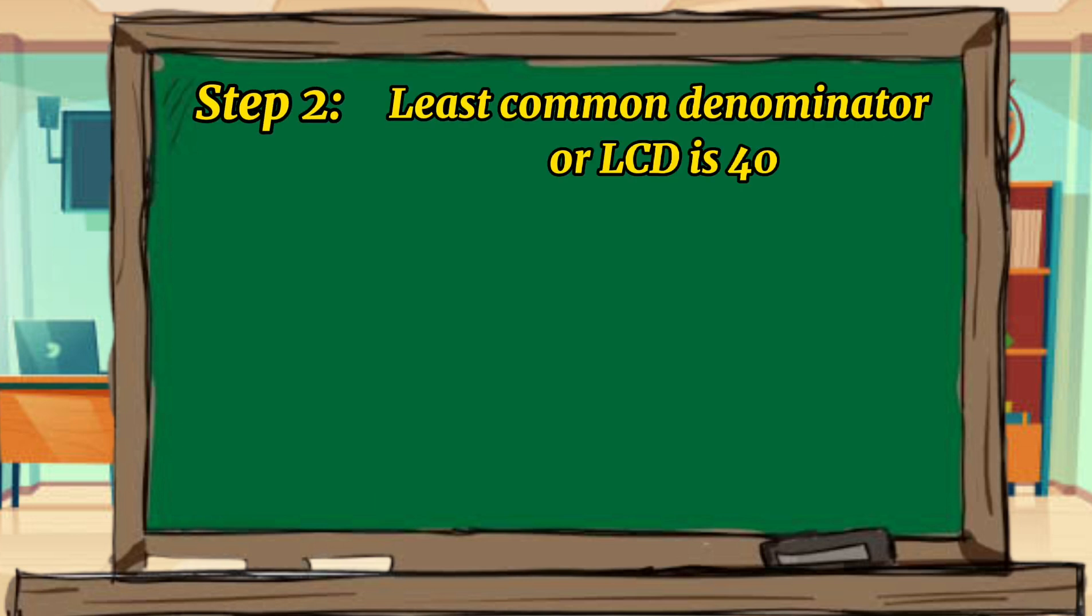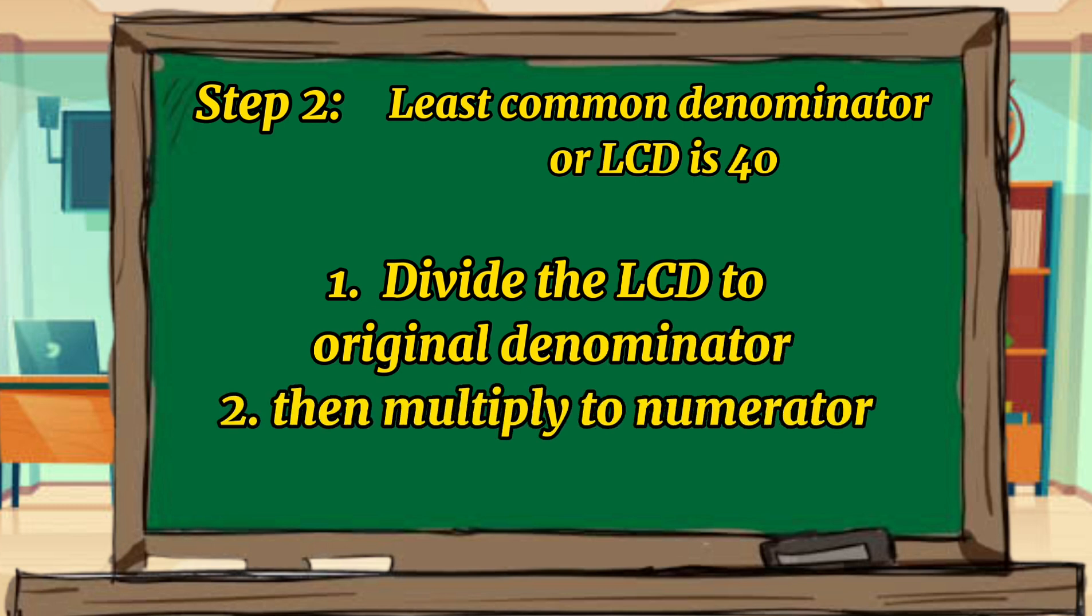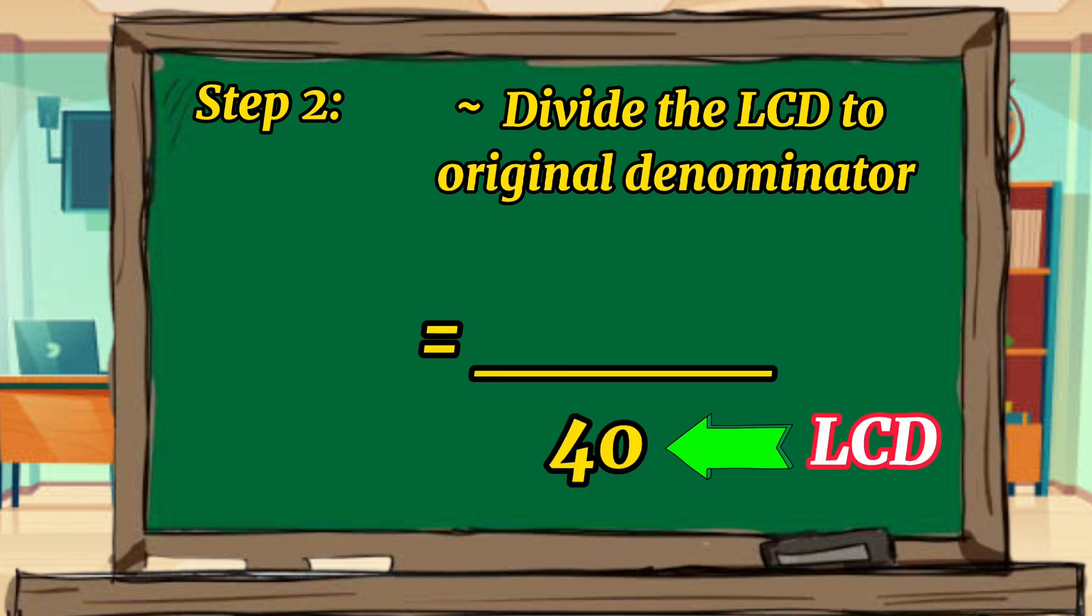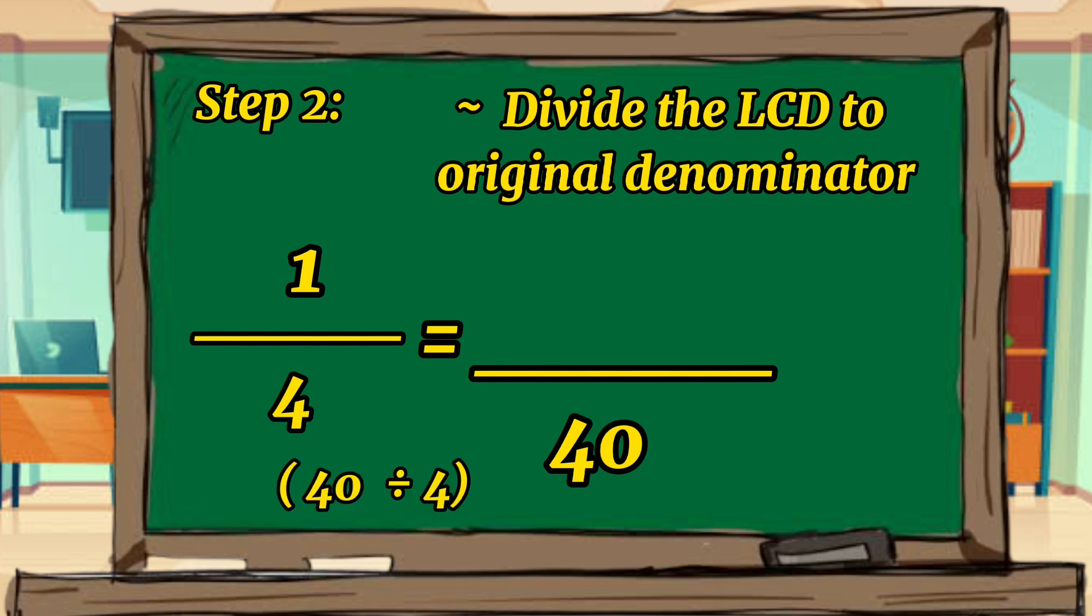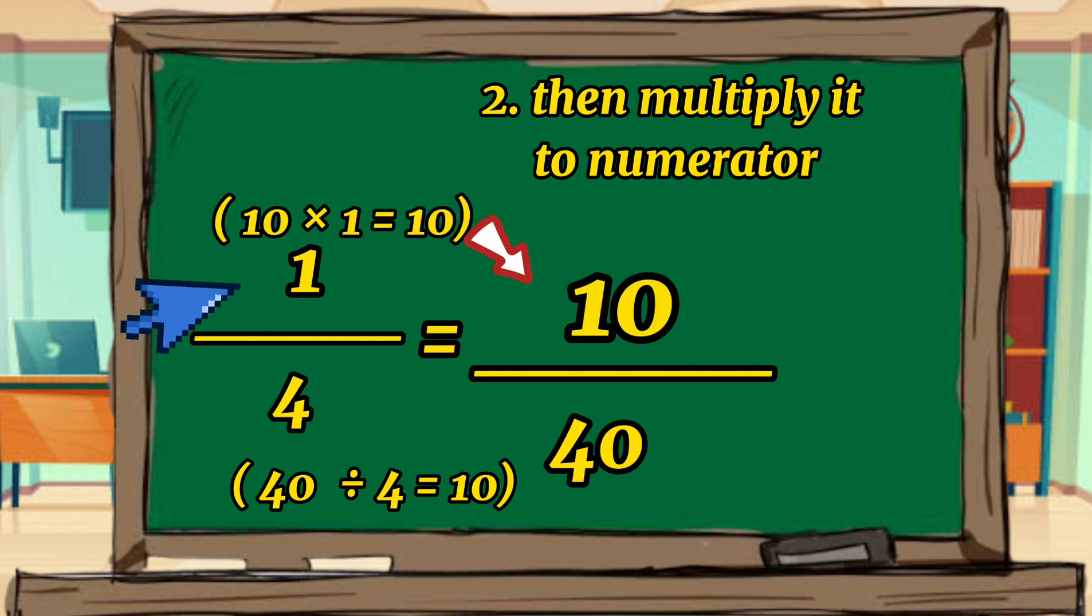For step 2, divide the LCD, which is 40, by the original denominator. Then, multiply the numerator. Here's the example. 40 is our LCD. 4 is the original denominator. So, 40 divided by 4 equals 10. Then, multiply it by the numerator. So, 10 times 1 equals 10. So, our new numerator is 10.